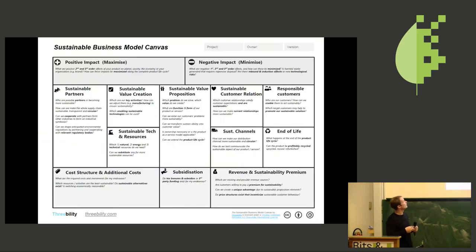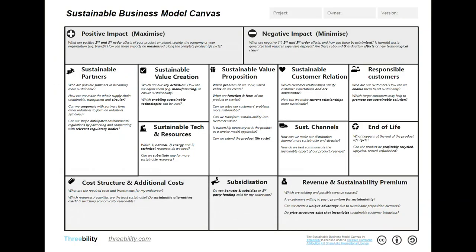So we started back then to adapt the standard business model canvas towards this one, the sustainable business model canvas. There are a few other versions out there as well, but this is the one we came up with, where for example we take into account the end of life, we take into account subsidization, and at the top we take into account the positive impact of the business and also the negative impact.